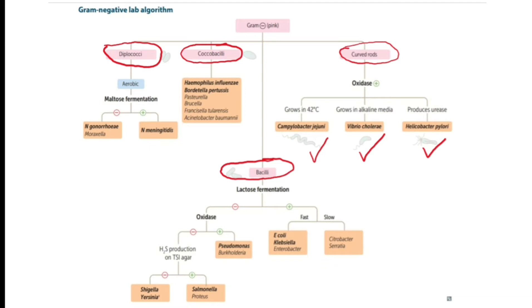Now let's go to the bacilli. They are classified according to their ability to ferment lactose - lactose positive and lactose negative. Lactose positive are further divided into fast or slow fermenters. Fast lactose fermenters include E. coli, Klebsiella, and Enterobacter. Slow lactose fermenters include Citrobacter and Serratia.